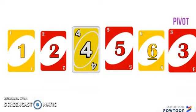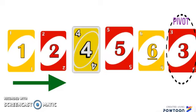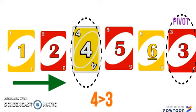Now I'll repeat the same process, starting from the left and finding the first card that's greater than my pivot, three. As I can see, one is less than three, two is less than three, but four is greater than three, so I found the card from the left.